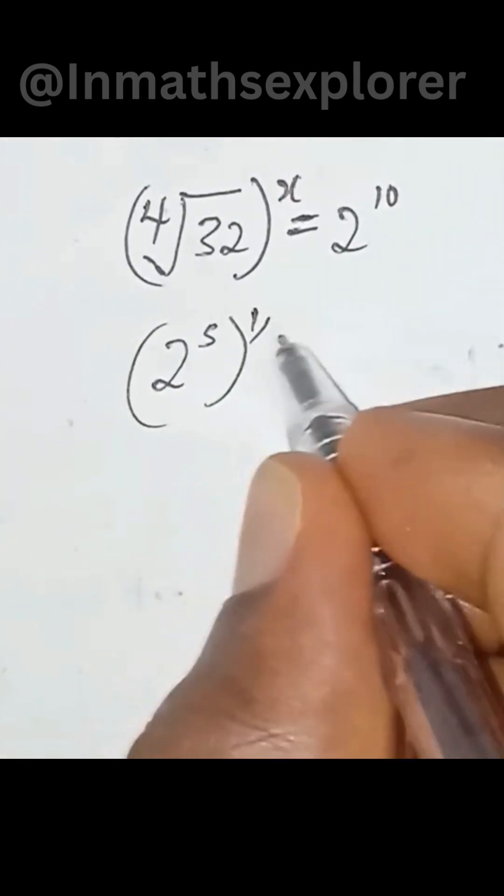So we can simply write this as 2 to the power of 5 into brackets to the power of 1 over 4.